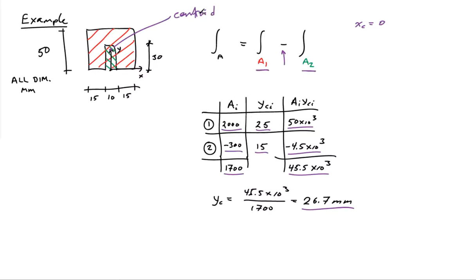So it's just another way of doing this. If you have areas that are cutouts, you can treat them using negative signs in the relationship for computing the total area.